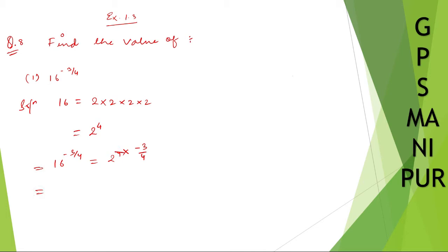This 4 and this 4 can be cancelled, so we get 2 to the power minus 3. Since there is a minus sign in the power, we write 1 divided by 2 cube. What would be 2 cube? 2 to 4 is 8. So 1 by 8 is your answer.